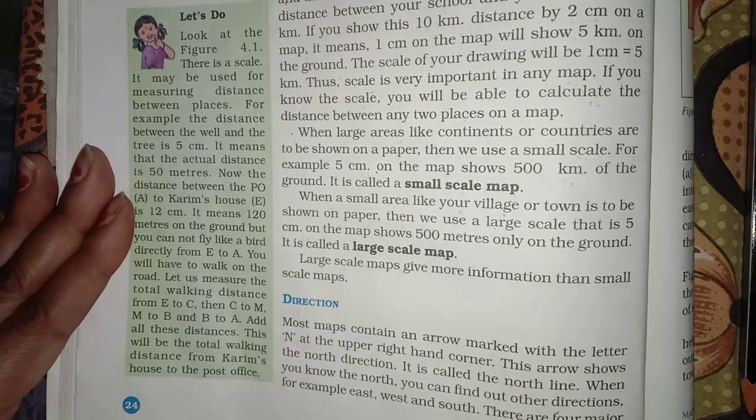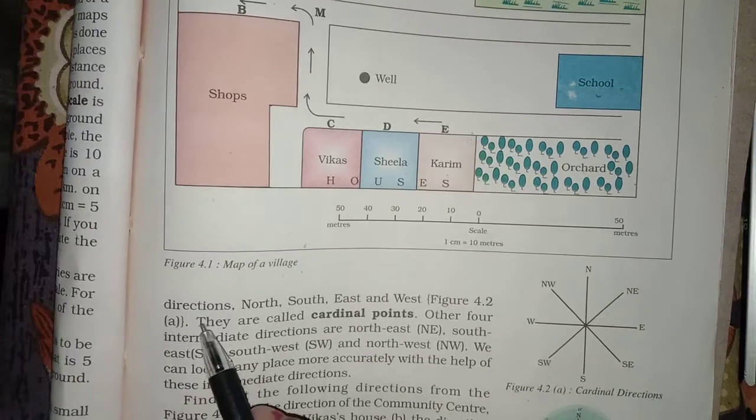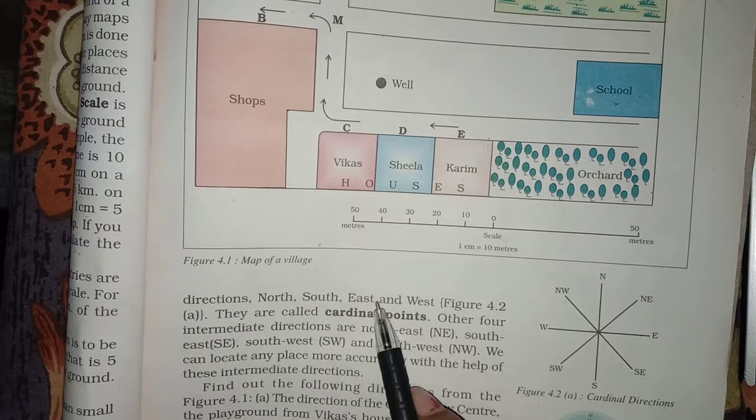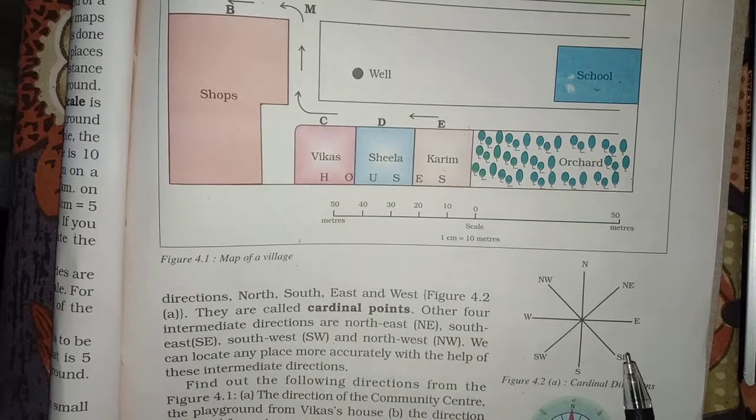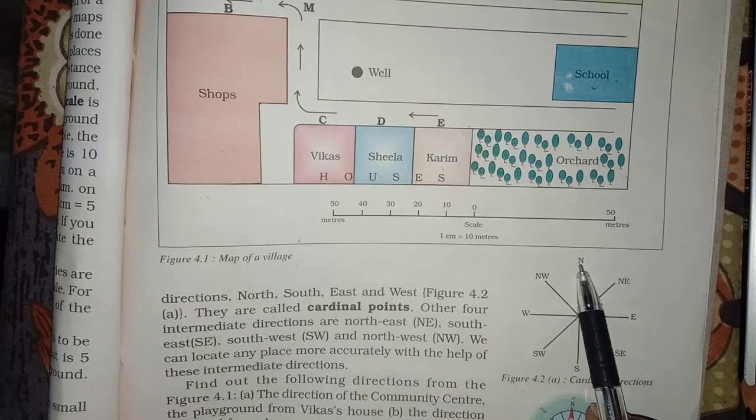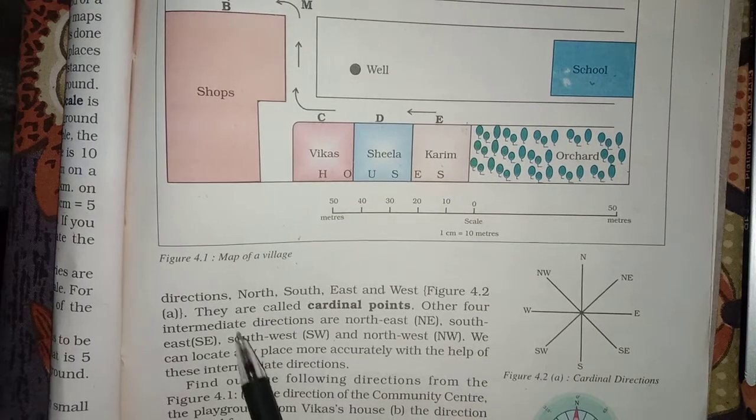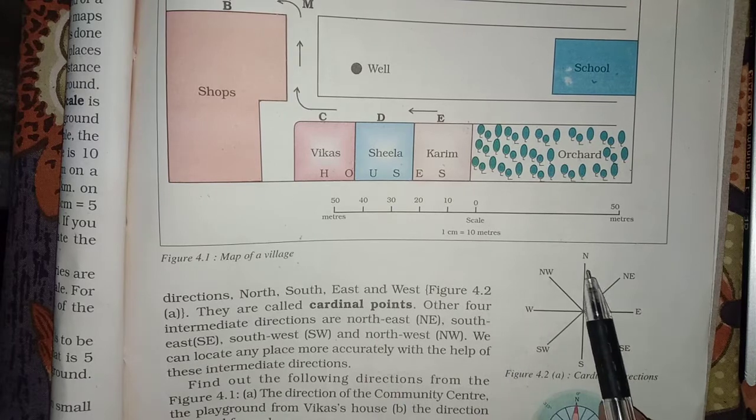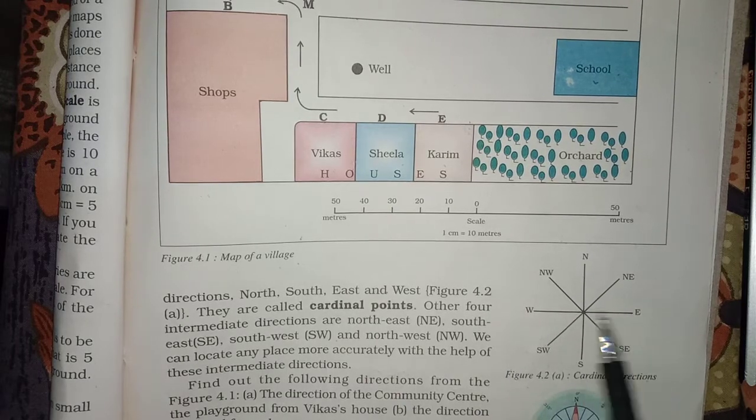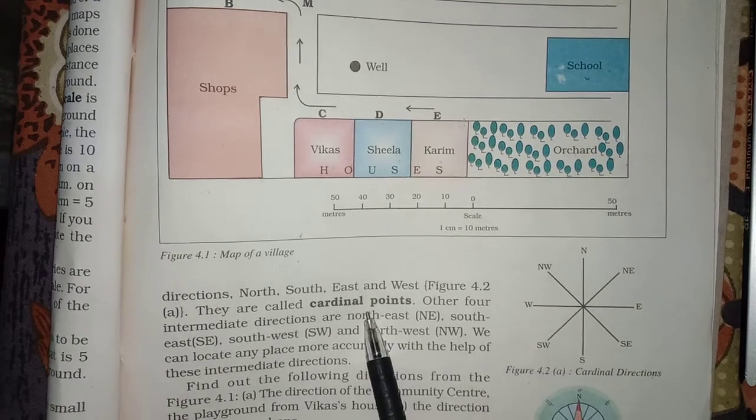There are four major directions: North, South, East, West. They are cardinal directions. What do they say? Cardinal points.